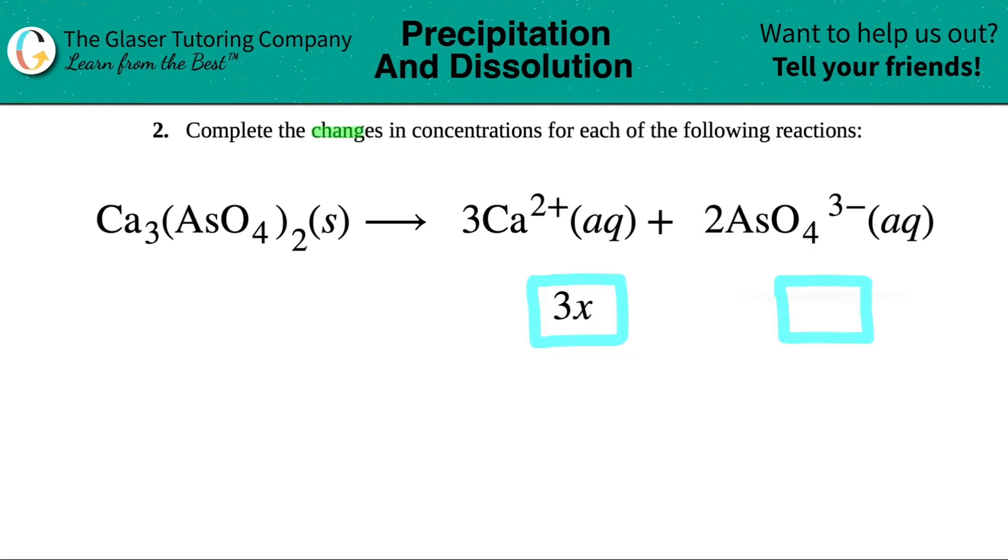Number two, complete the changes in concentrations for each of the following reactions. We have this balanced equation. We have Ca3(AsO4)2 solid which will dissociate or yield into 3Ca2+ aqueous.